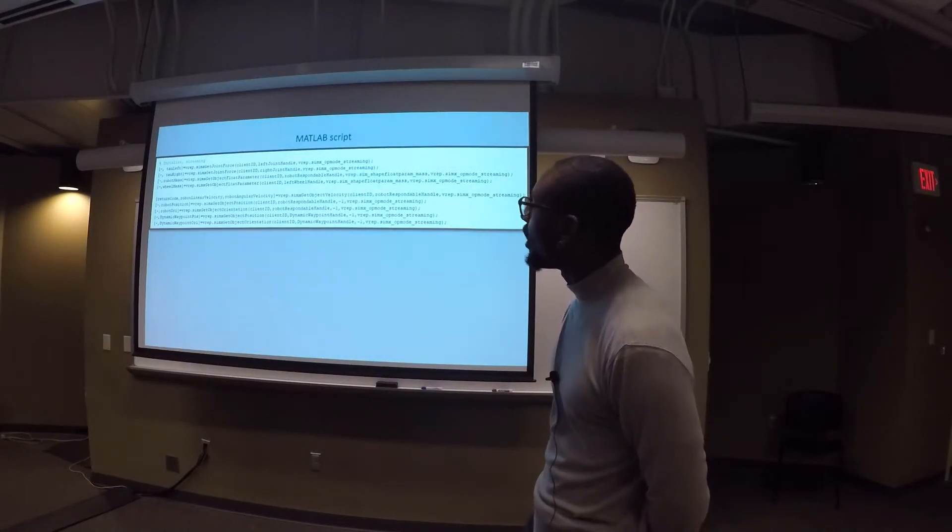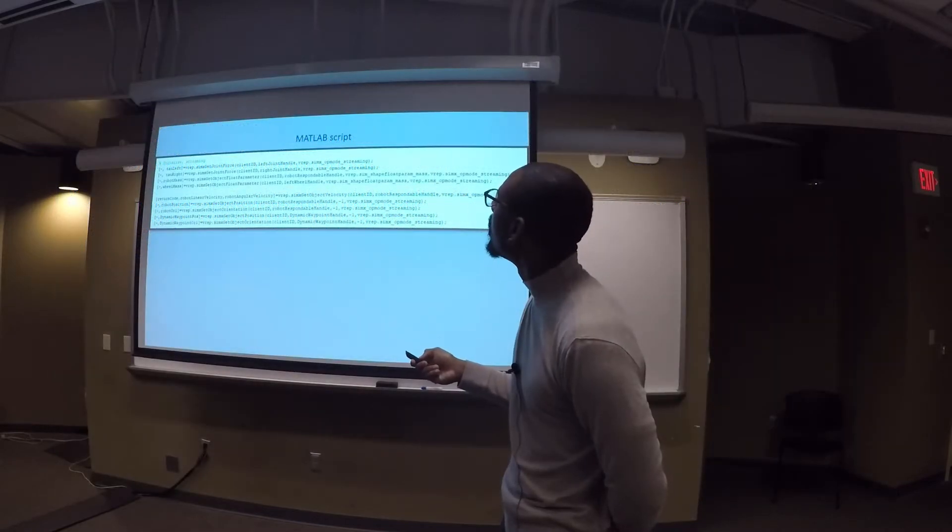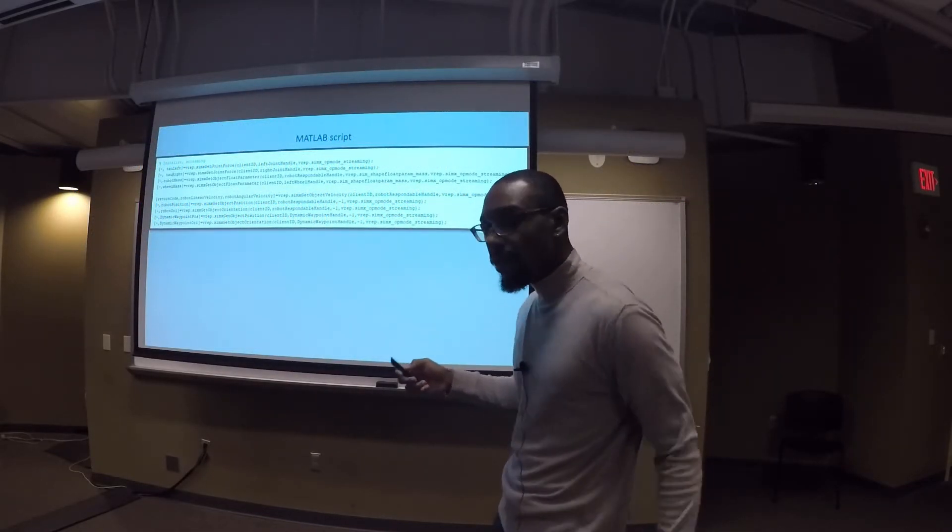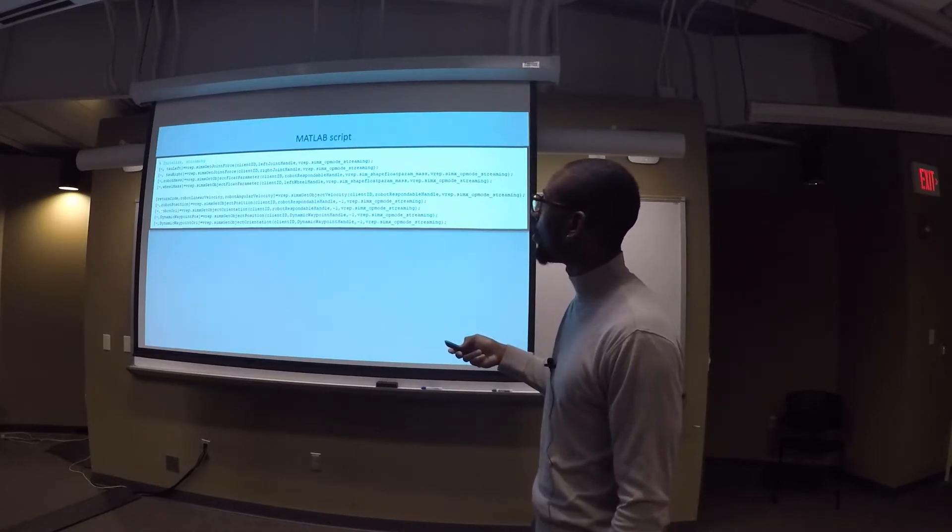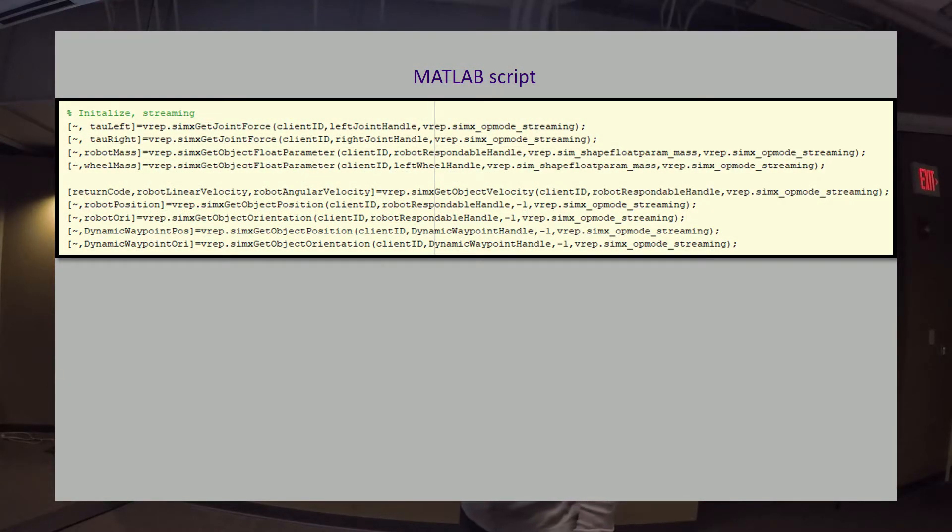Once we get the object handles, we initialize the streaming of the data. We prepare a buffer to say, hey, this is the data that we're going to need using SimX_get_joint_force. We specify streaming on all of these different channels because we're just initializing the buffer to let them know that this is the type of data that we're going to need. We're getting the joint force for each individual wheel—left wheel and right wheel. We're getting the mass of the robot and the wheels, the linear and angular velocity of the entire robot. We're getting the position and orientation. And lastly, the waypoint and the waypoint orientation, which is going to become extremely important in the next upcoming slots.